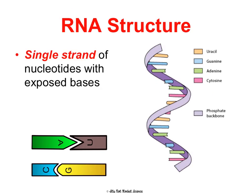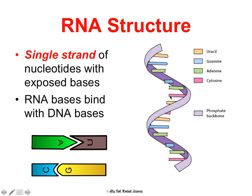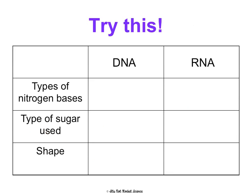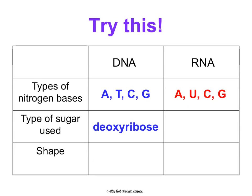RNA structure is a little simpler — it's just a single-stranded nucleotide with exposed bases. RNA bases bind complementarily with DNA bases, but since there's no thymine in RNA, A's bind with U's, and C's bind with G's. In a comparison chart: DNA is made of A, T, C, and G; RNA is made of A, U, C, and G. The sugar in DNA is deoxyribose; in RNA it's ribose. DNA's shape is a double helix; RNA is a single strand.